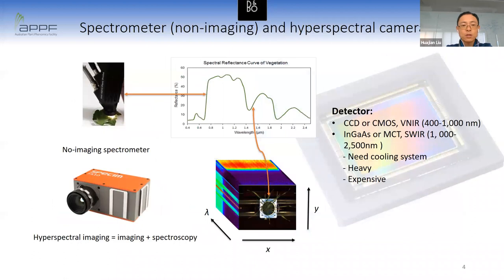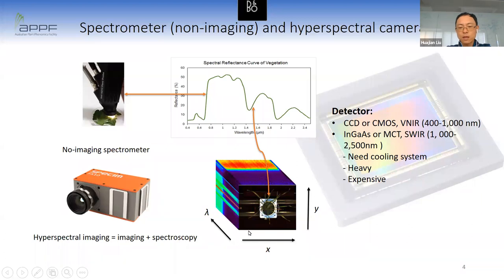Hyperspectral imaging technology was initialized from non-imaging spectrometers, where each measurement corresponds to a high-dimensional vector called a spectral signature. Hyperspectral imaging is the combination of imaging technology and spectroscopy — each measurement corresponds to a 3D data cube which includes two spatial axes X and Y and one wavelength axis lambda, and each pixel corresponds to a spectral signature.